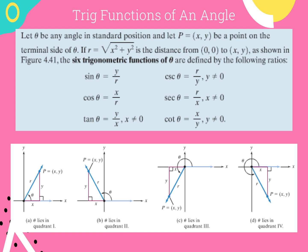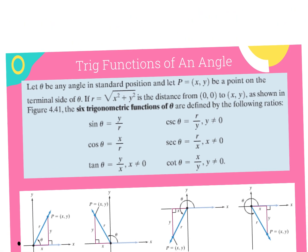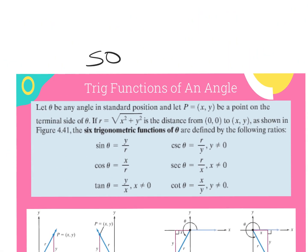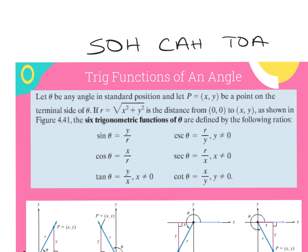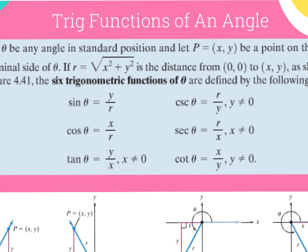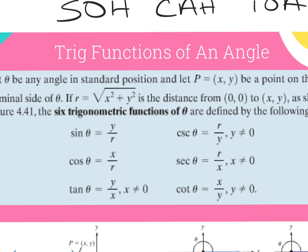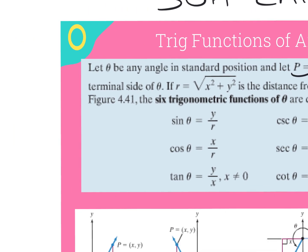We did this last year in geometry, so you might remember the acronym SOHCAHTOA. What's going to be easier, since you're going to be given an ordered pair, is to memorize the ratios as y over r, x over r, and y over x. In an ordered pair the first number is x and the second is y. We'll also need to find the r value, which is really our hypotenuse.